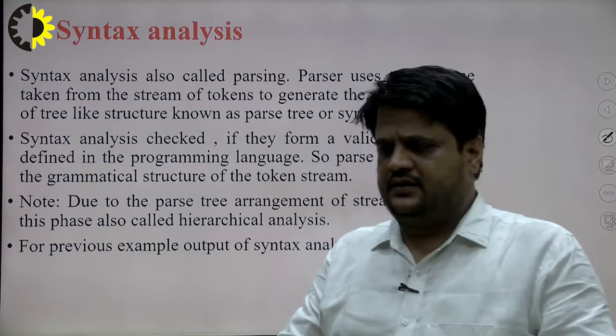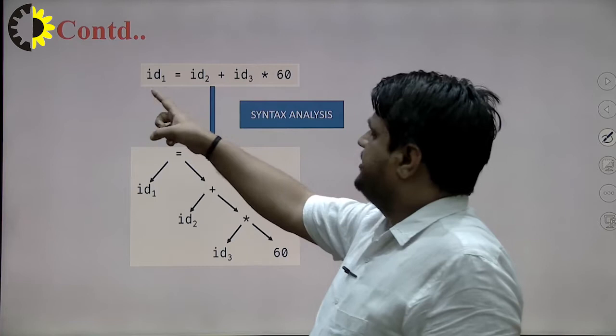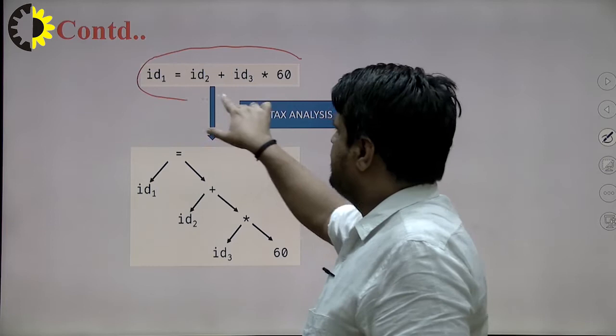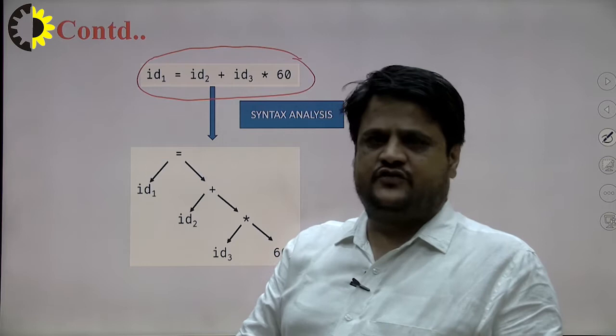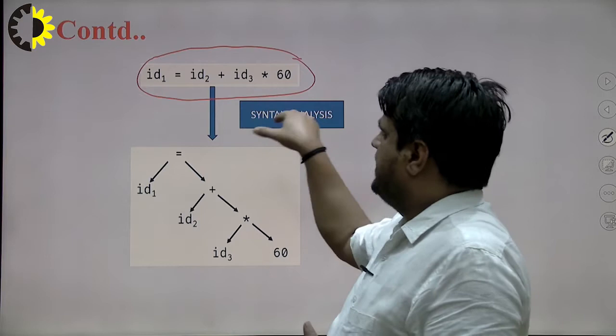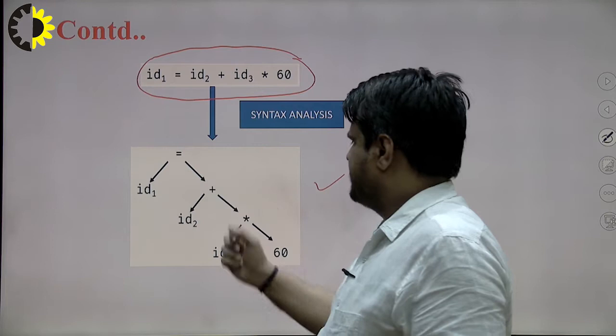For the previous example, the output of the syntax analysis phase is this one. It will check grammatically whether the particular stream of tokens forms a valid sequence or not. If it forms a valid sequence, a parse tree gets generated. If it does not form a valid sequence, the parse tree never gets generated. In this particular string, we will generate a parse tree in this format.